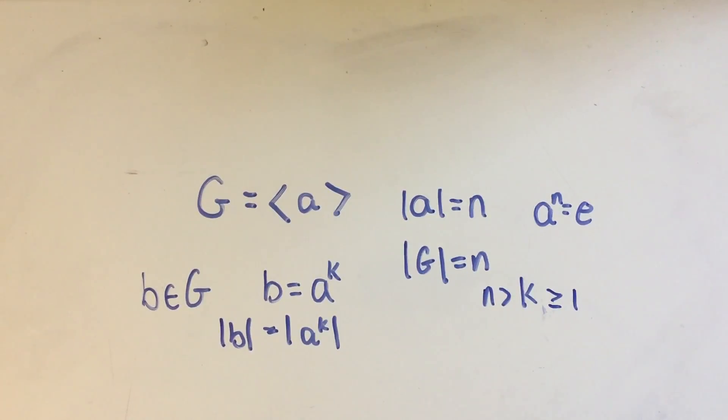And by a theorem I proved in one of my previous videos, we know that the order of A to the K is equal to N divided by the greatest common divisor of N and K.